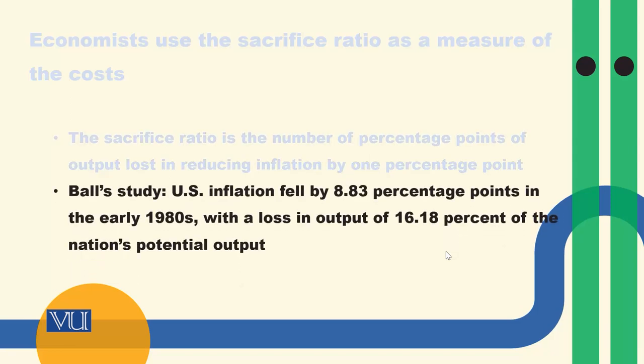So ek study thi US economy per. Onnoha nne dekha ki wahaan per inflation mein kami aayi 8.83 percentage point — percent aur percentage point ka difference mein aapko explain kar chuka hun. Ye percentage point hai, percent nahi hai. So 8.83 percentage point mein kami aayi 1980s mein. Uske intiagay mein output mein jo kami hai, woh 16.18% of the national potential output ke tha.